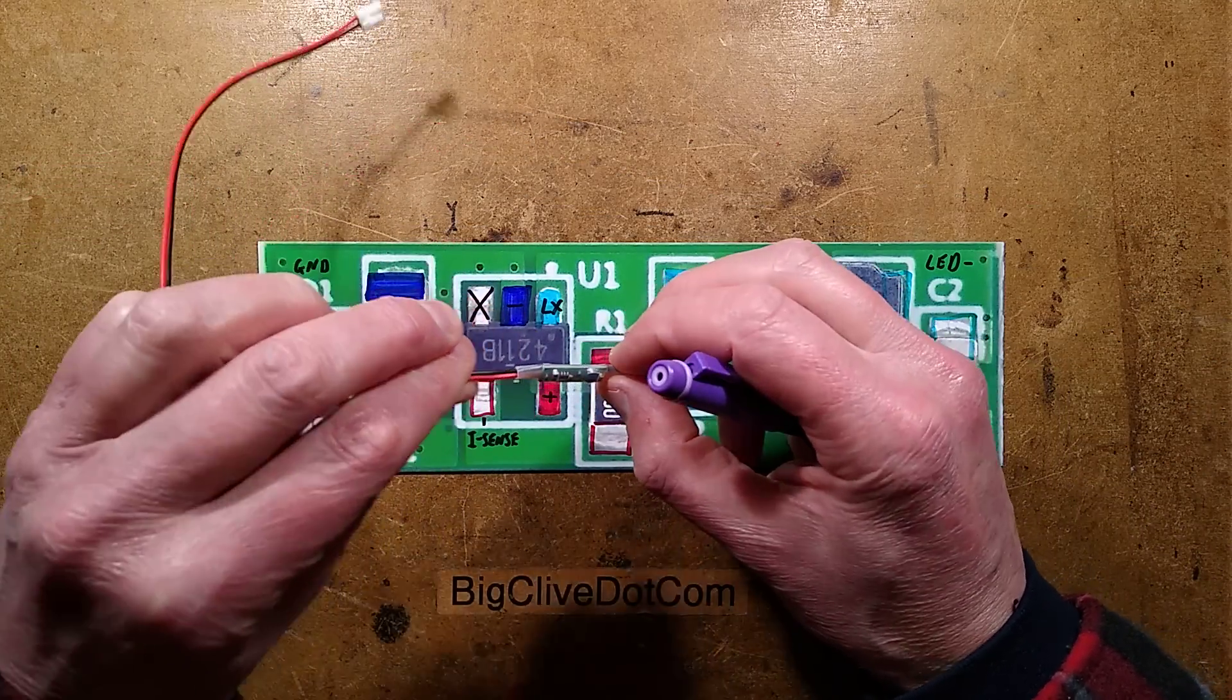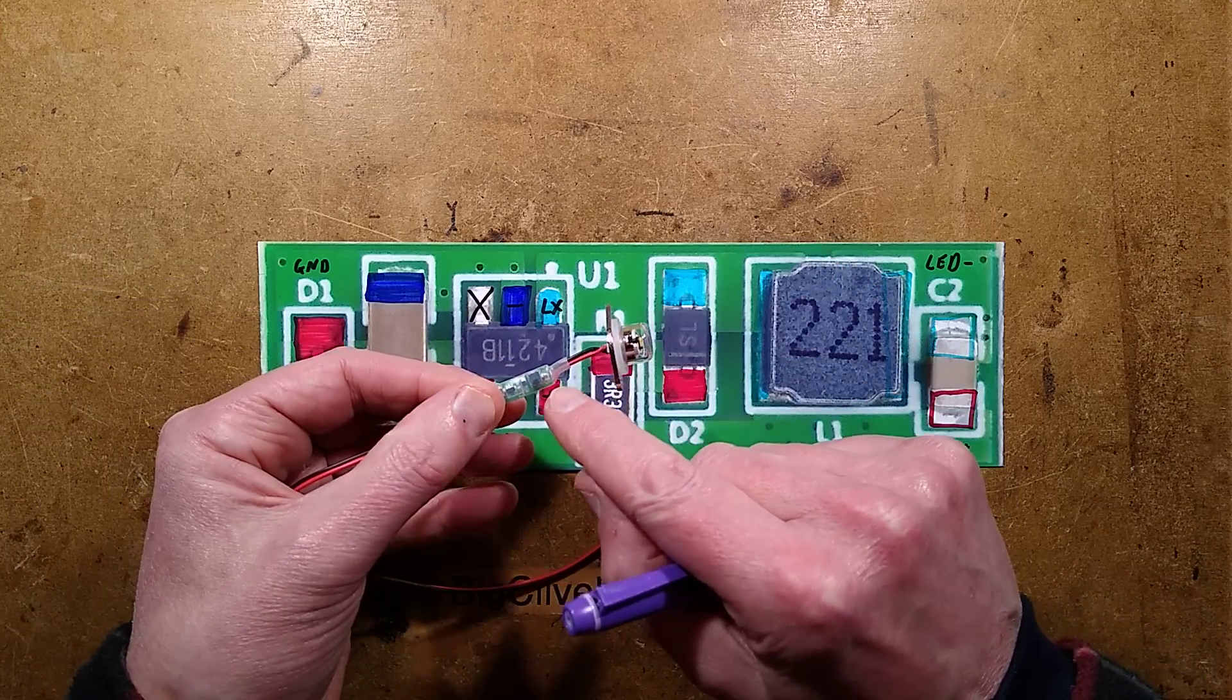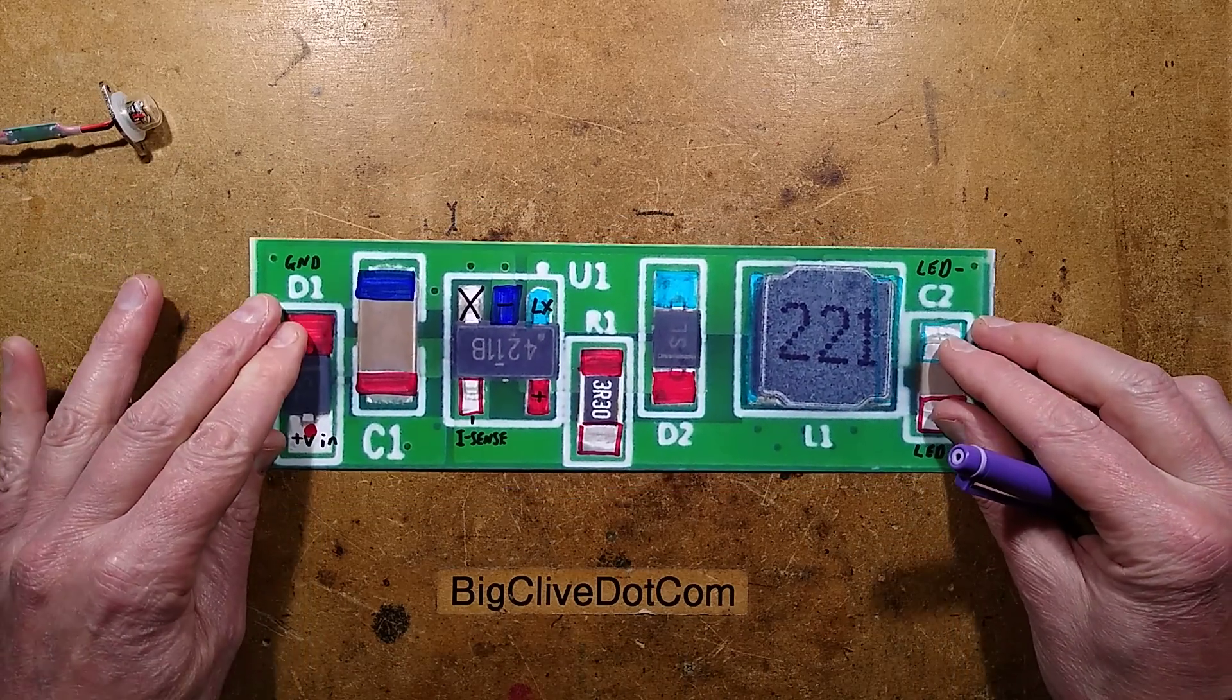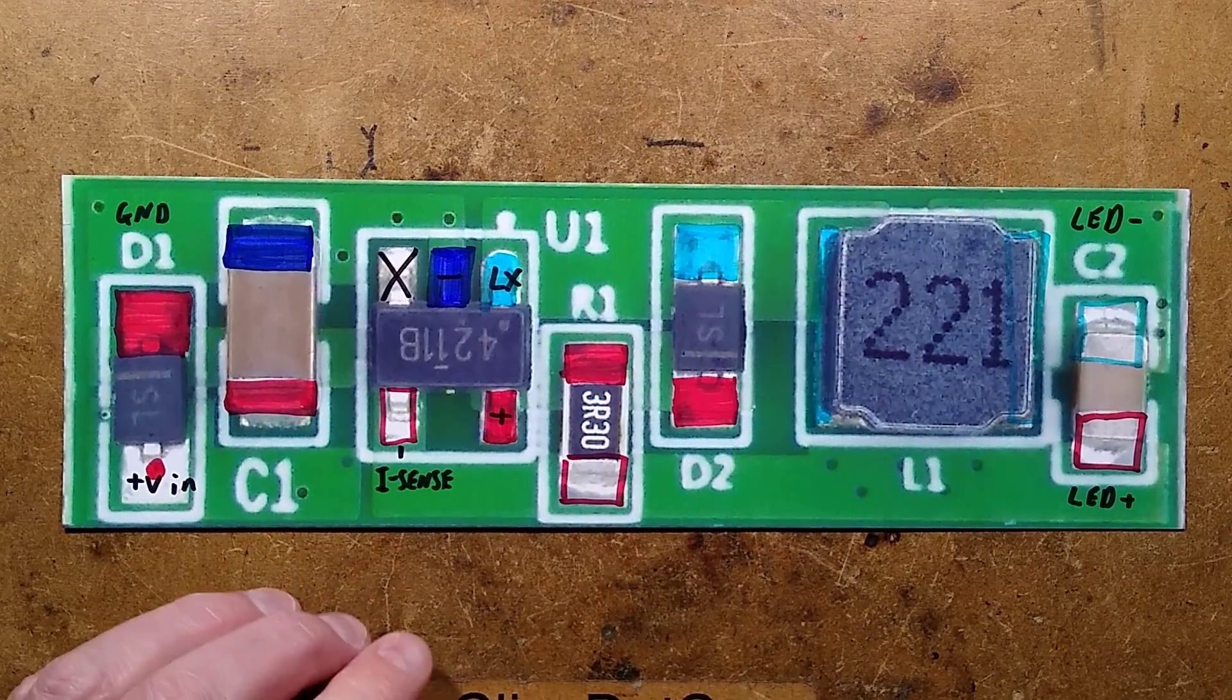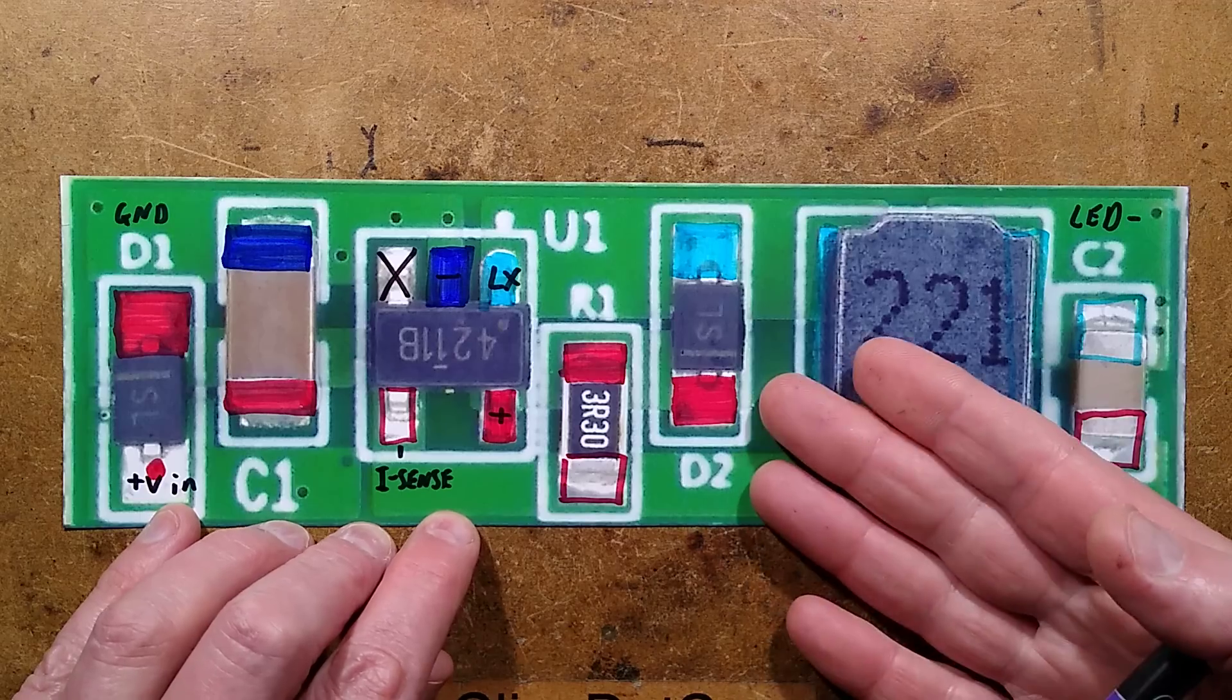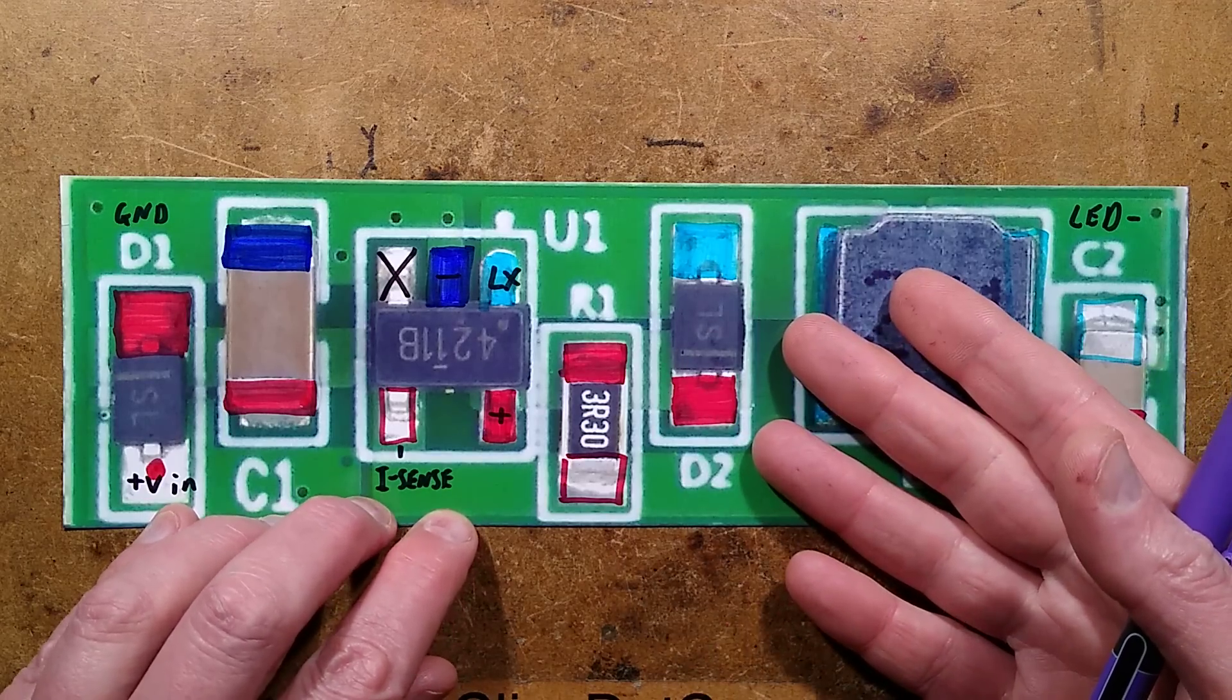I did all the work, took this apart, then put it back together with translucent sleeving on it. But before finalizing, before sliding the sleeving across, I put the meter in line with the LED to measure the current. It is based, I'll zoom in on this, on a PT4211B LED driver.